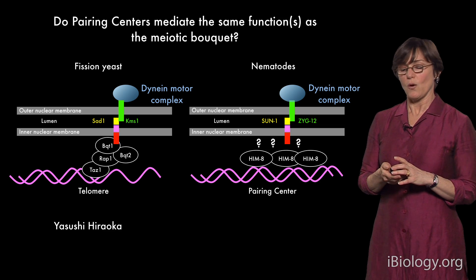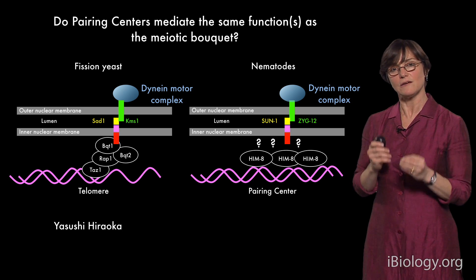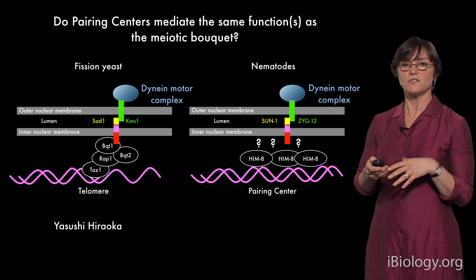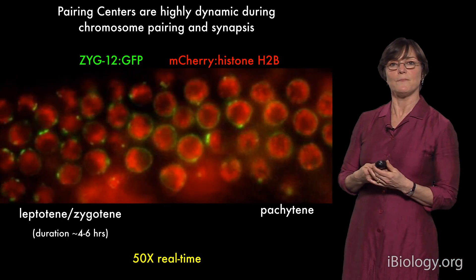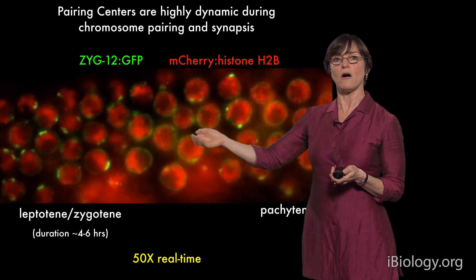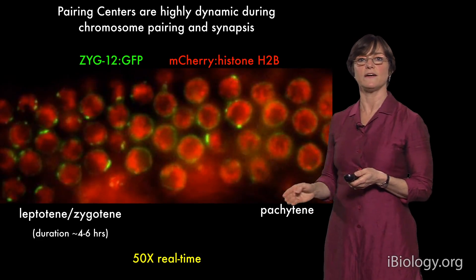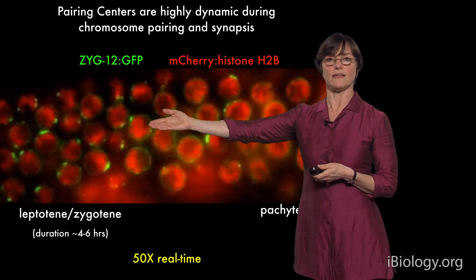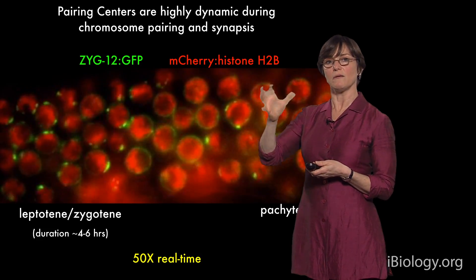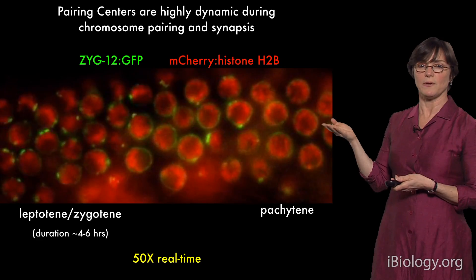One way we've explored the role of these interactions in promoting pairing and synapsis is to take advantage of the fact that we can observe meiosis in living organisms and look at chromosome dynamics in real time using fluorescent protein tags. This shows an early recording made in my lab: ZYG12-GFP in green — the nuclear envelope protein associated with all pairing centers — and in red a histone protein labeled with a red fluorescent protein to identify individual nuclei. In these early meiotic nuclei undergoing pairing and synapsis, these patches of ZYG12 and the associated pairing centers are dramatically moving all around the nuclear envelope, and that motion becomes much less obvious and the patches dissipate upon chromosome pairing and synapsis.